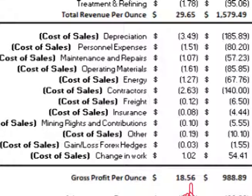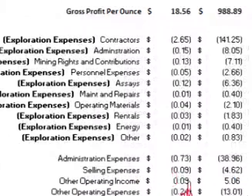Subtracting the cost of sales of $11.09 per ounce from the total after-refining revenue of $29.65 per ounce gives a gross profit of $18.56 per ounce.